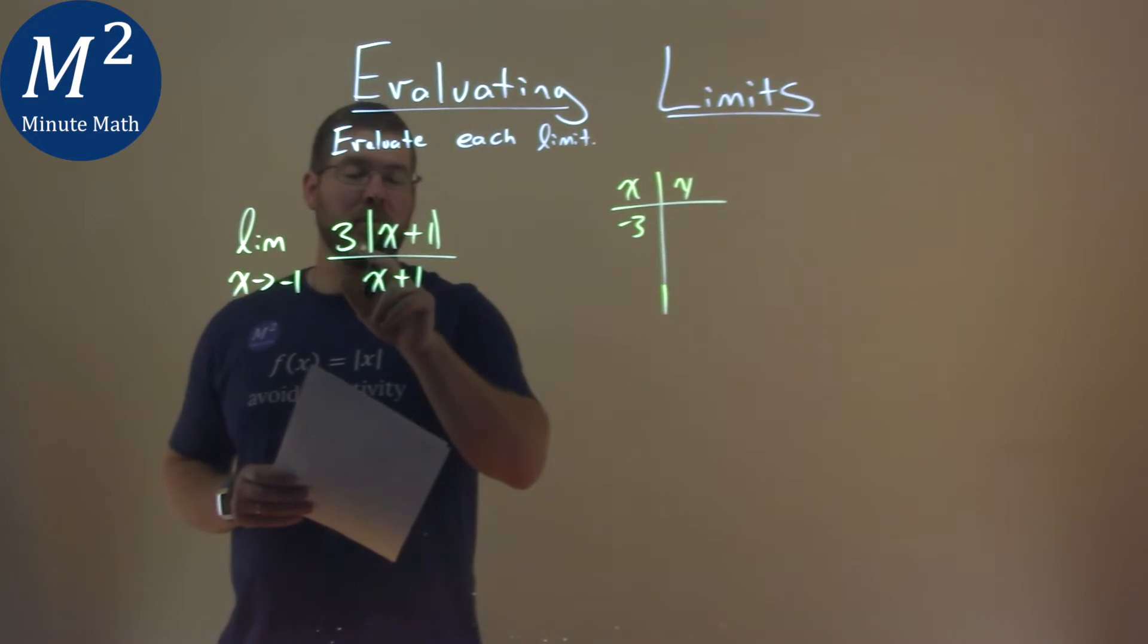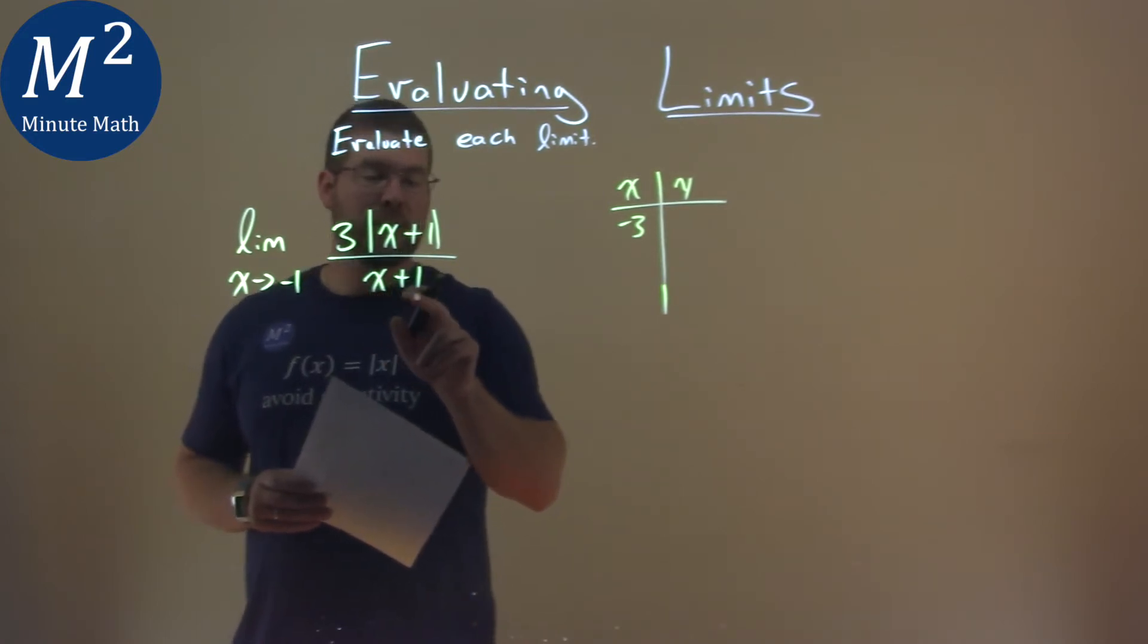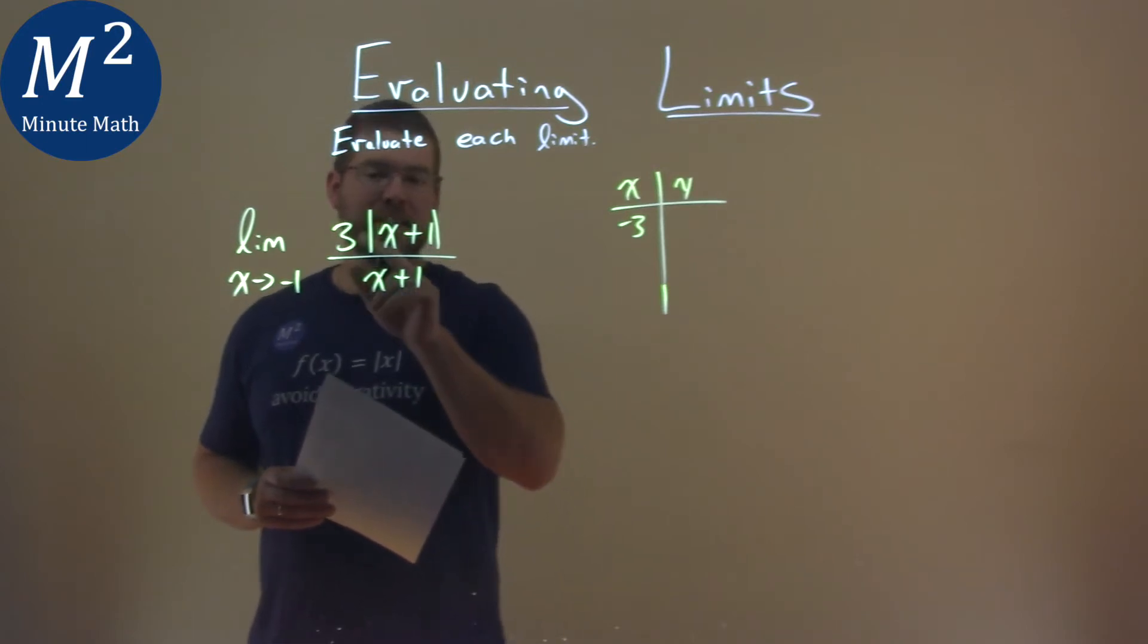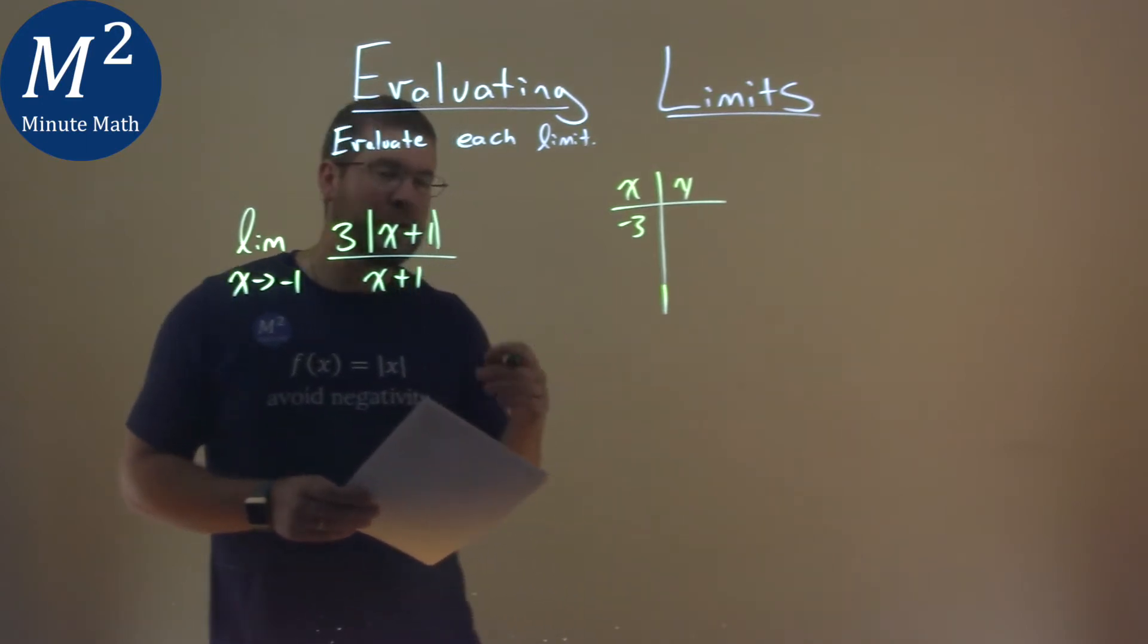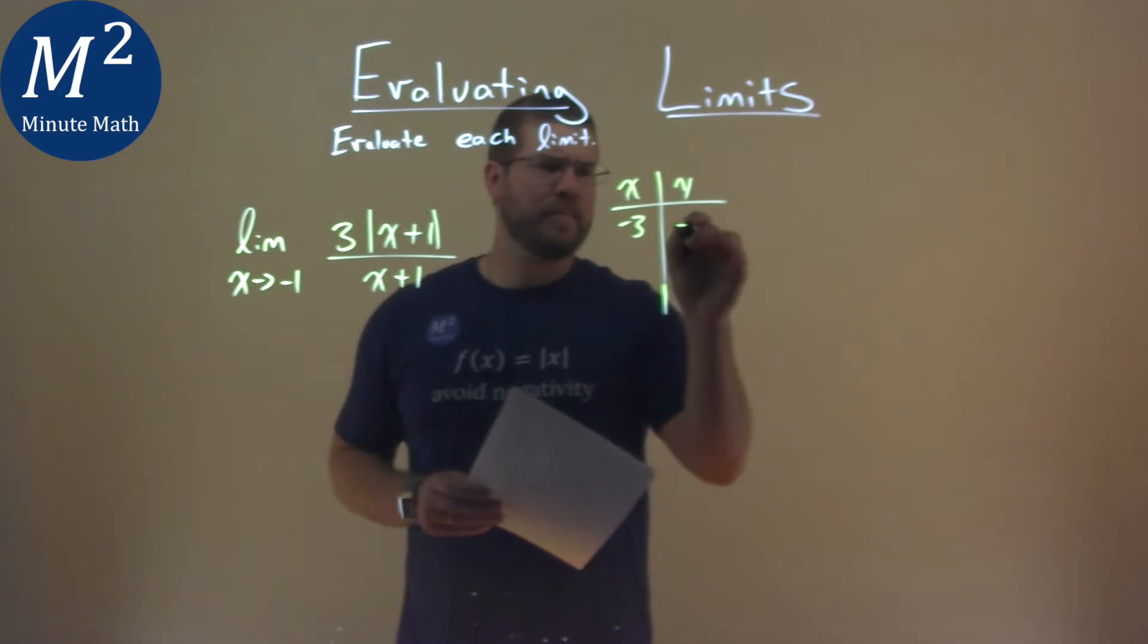Well, then we multiply by 3, we get a 6. In the denominator, we have a negative 3 plus 1, which is a negative 2, and 6 divided by a negative 2 is a negative 3. Okay?